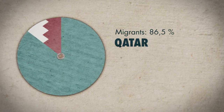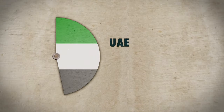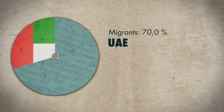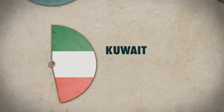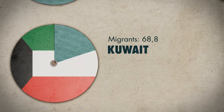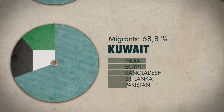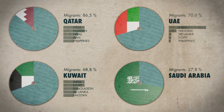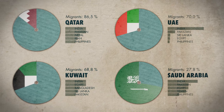In proportion to their population, Persian Gulf countries host the largest share of migrants, about 35% of their population. They mostly come from South Asia and Egypt.